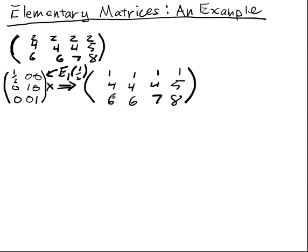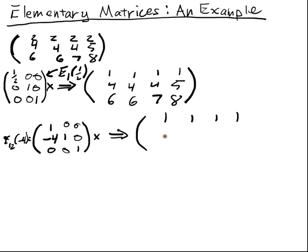Now the next thing is we want to clear out these two rows. So in order to do that, we're going to multiply first by 1, 0, 0, 0, 1, 0, 0, minus 4, 1. This will subtract 4 of row 1 from row 2, and this is E12 of negative 4. That's what this matrix is. And we multiply that, what do we get? 1, 1, 1, 1, 0, 0, 0, 1, 6, 6, 7, 8.